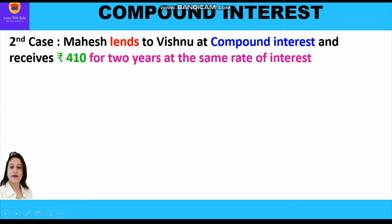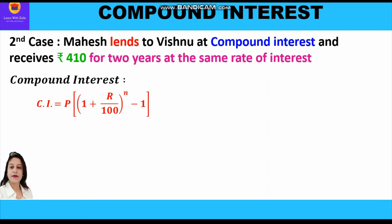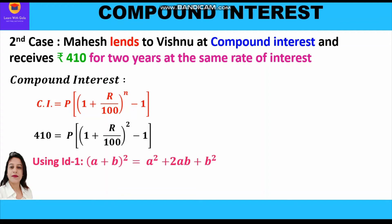Now we shall solve the second case where Mahesh lends to Vishnu at compound interest and receives rupees 410 for two years at the same rate of interest. We shall use the formula CI = P × [(1 + R/100)^n − 1]. Compound interest is 410, so: 410 = P × [(1 + R/100)^2 − 1].